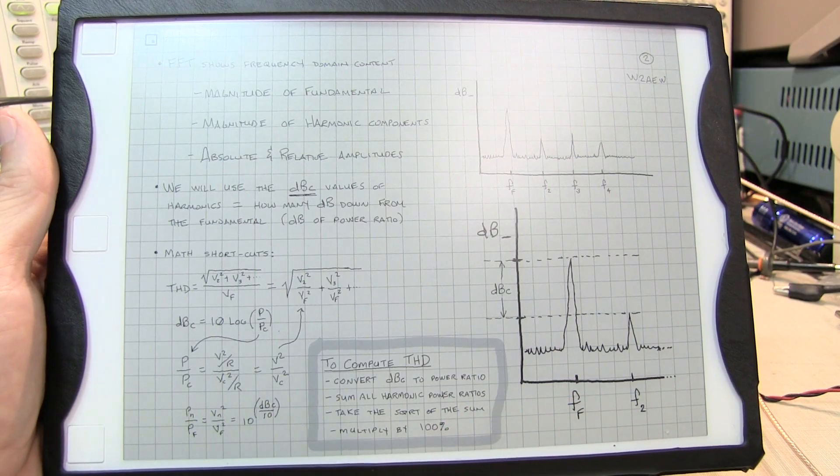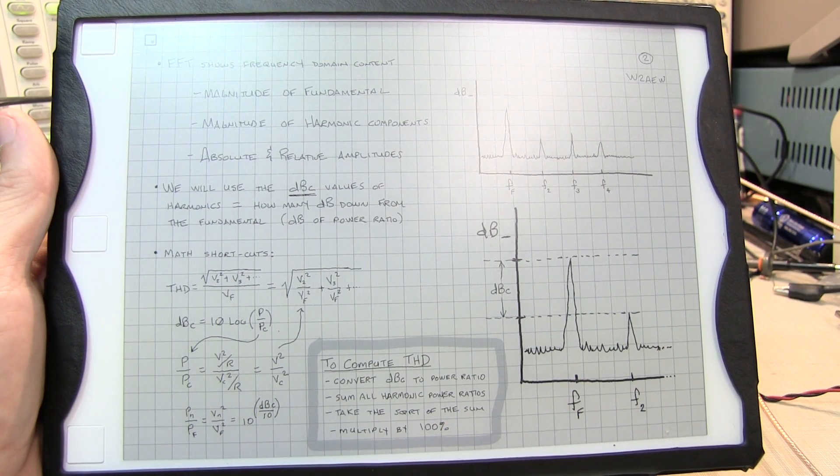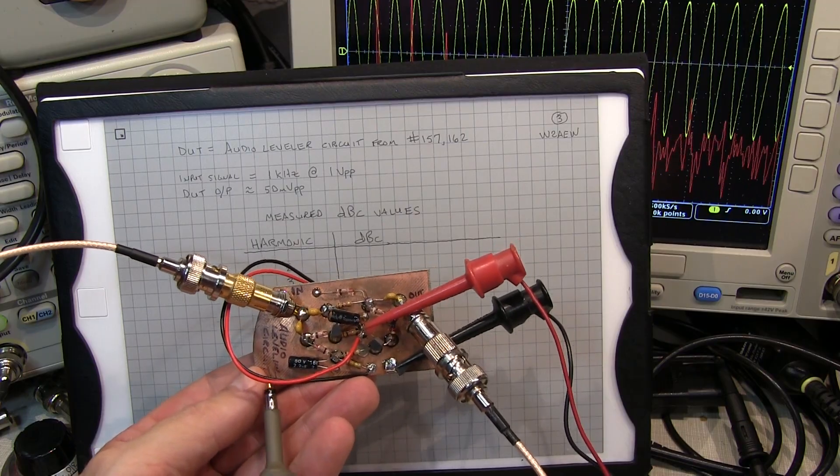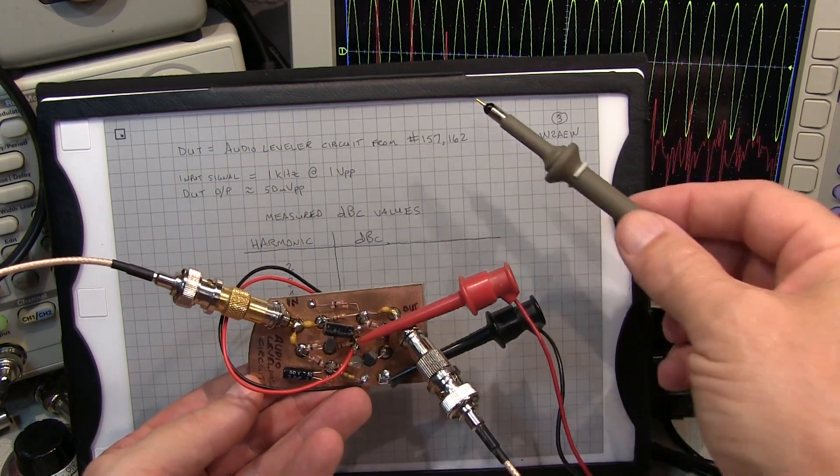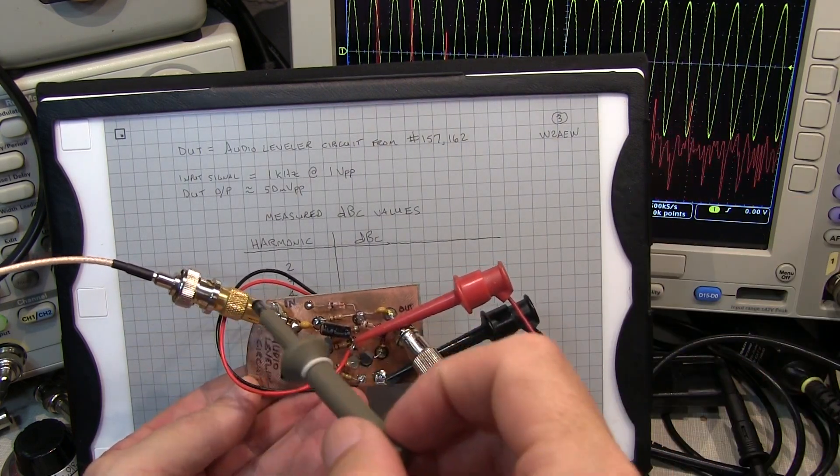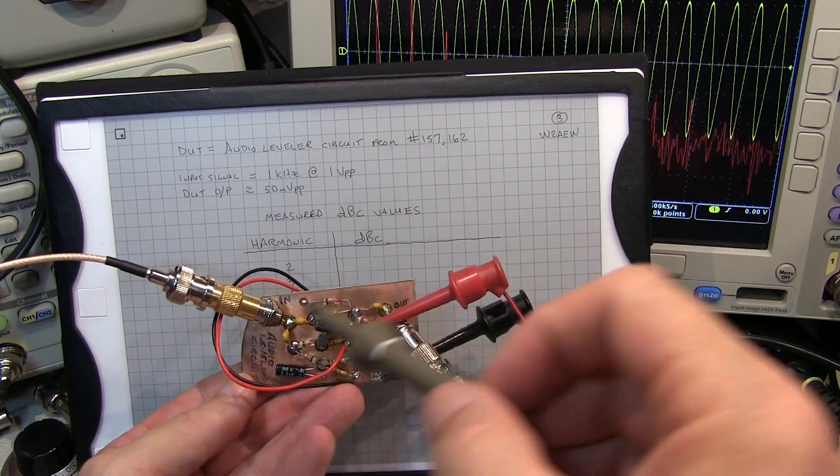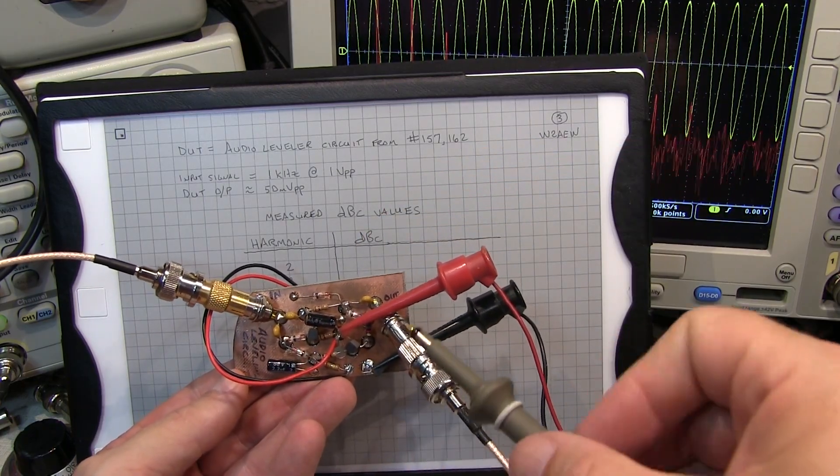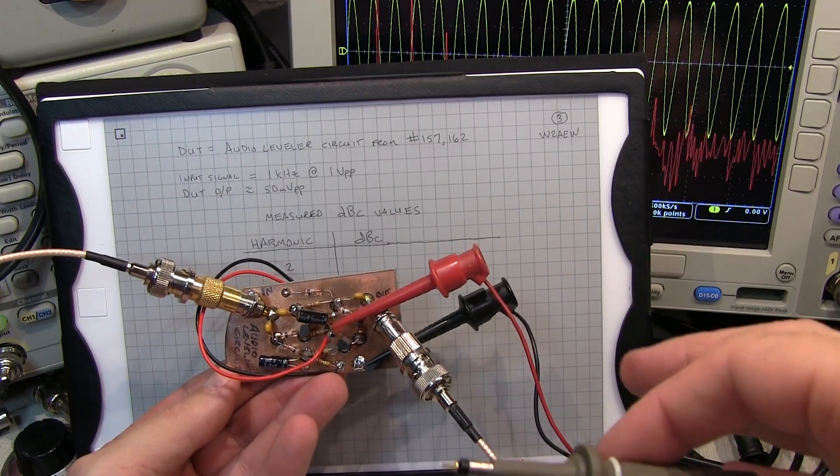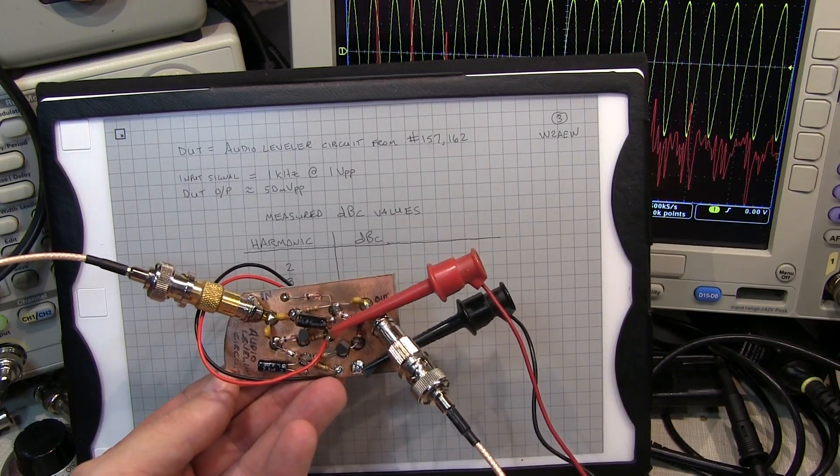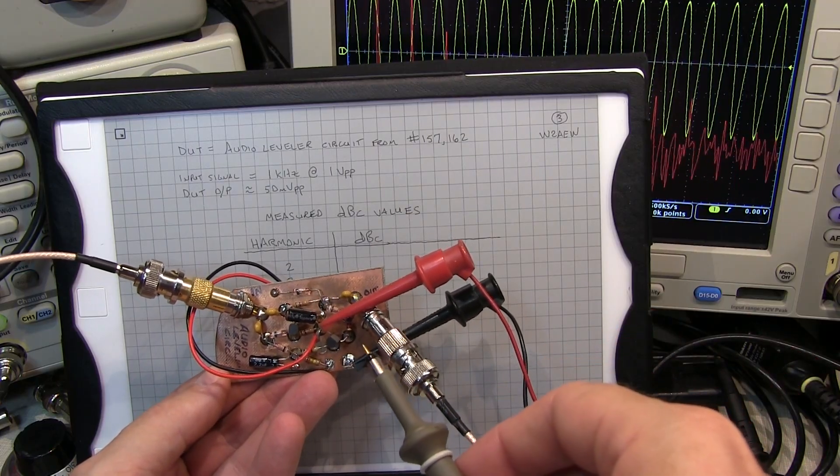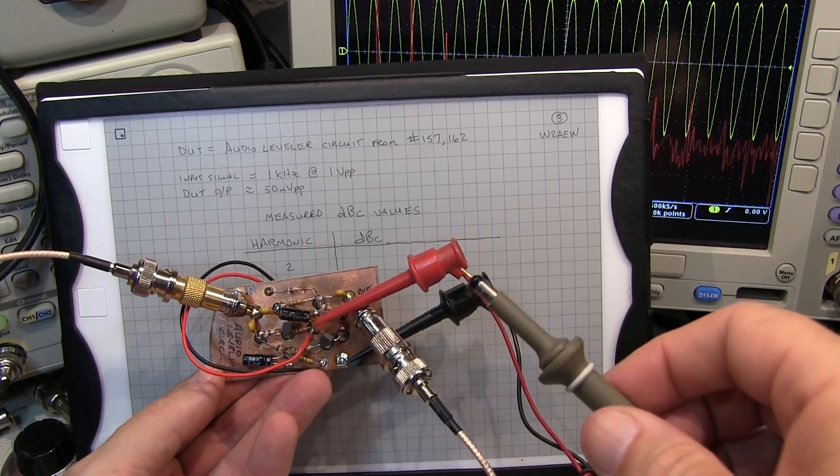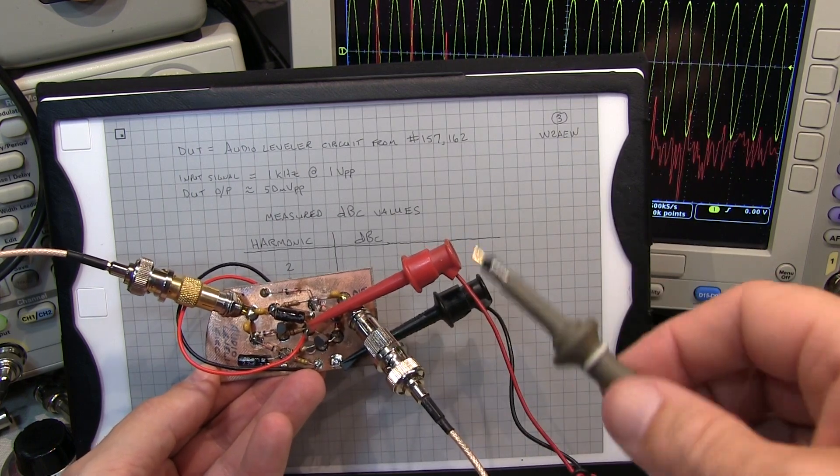It's as simple as that. Now of course, this computation, you need a scientific calculator to do, but most people have that on their phones these days. So let's go take a look at it. So here's our test subject today. This is the auto leveling circuit that appeared in videos 157 and 162 that takes an audio input that can vary over a very wide amplitude range and knocks it down to a more manageable, constant output.